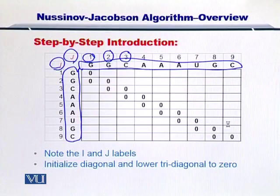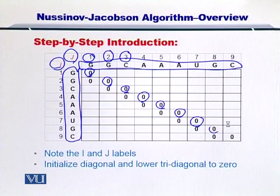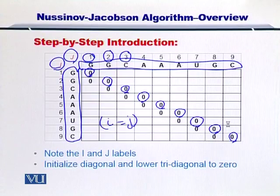And then in the next step, what you can do is you can set the diagonal of this matrix to zero. Let's take a look. All of these values are zero. These positions are essentially where I is equal to J. So all such positions are set to zero.